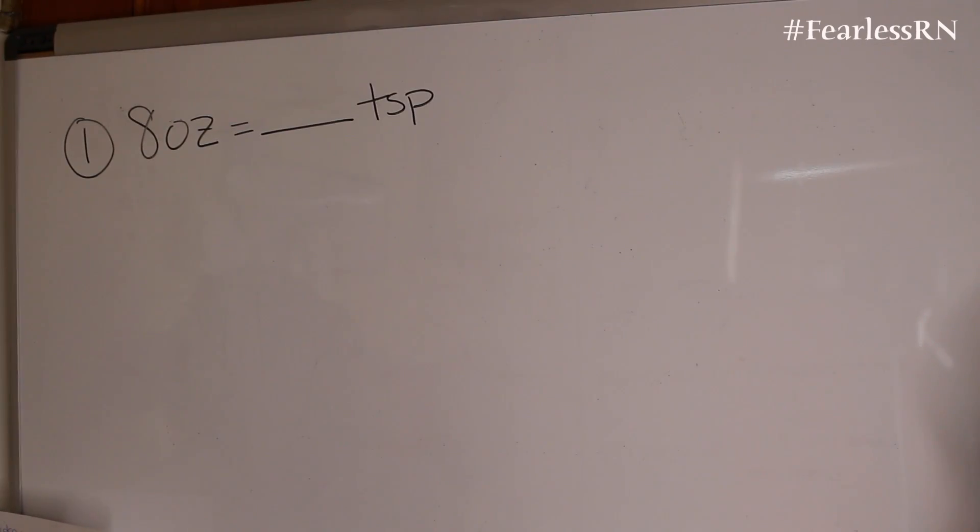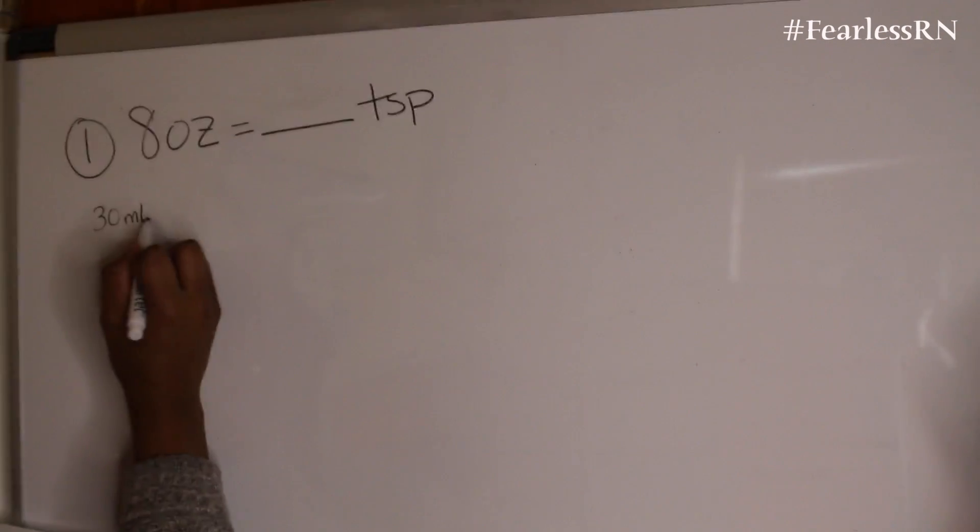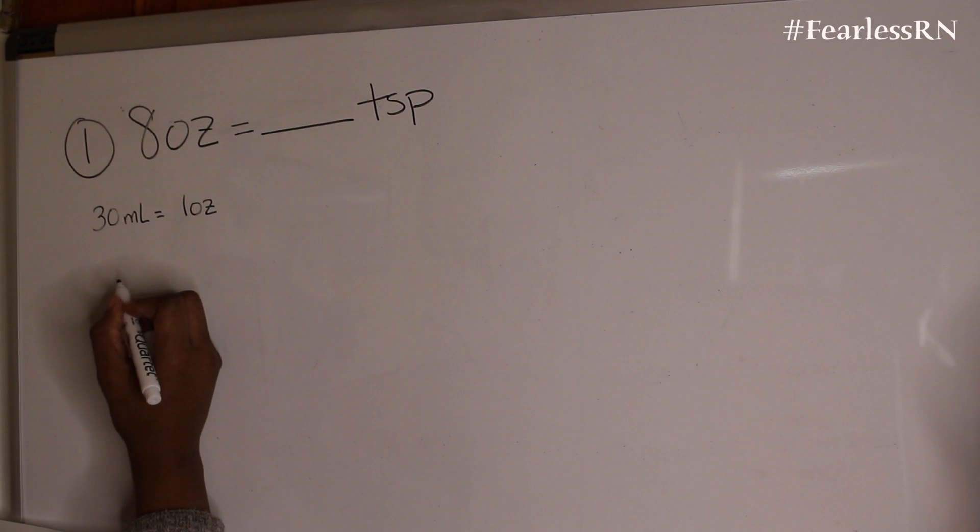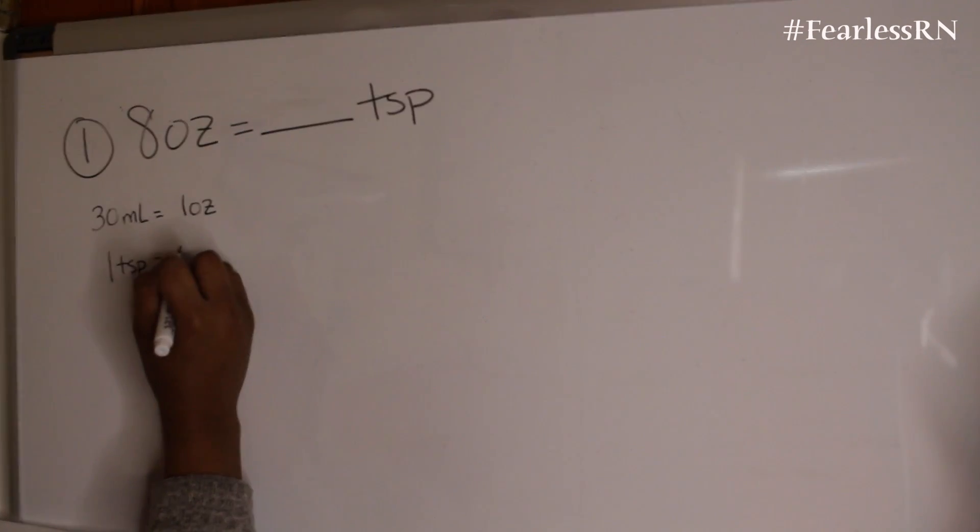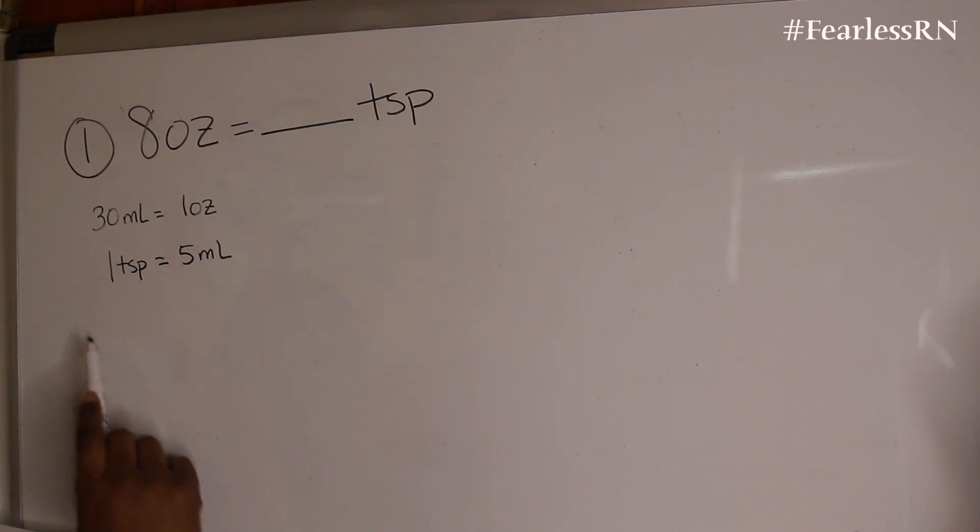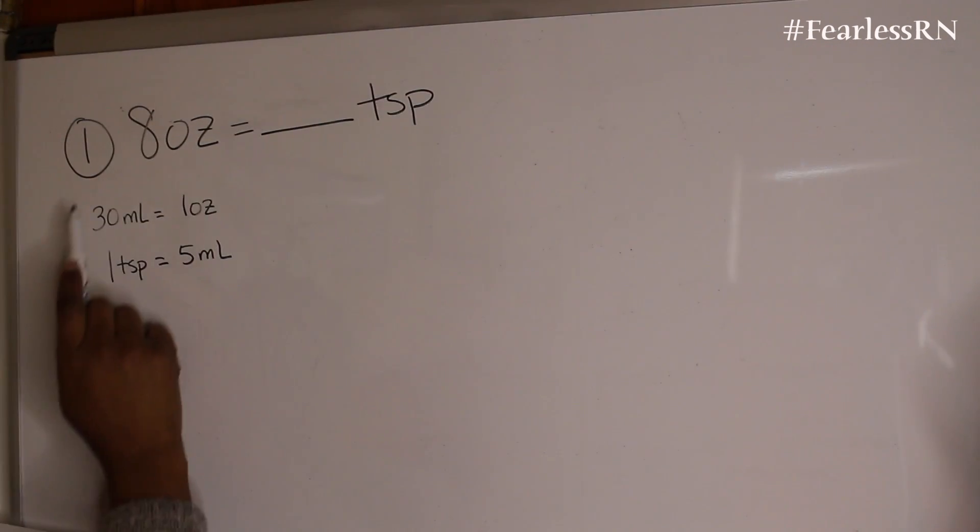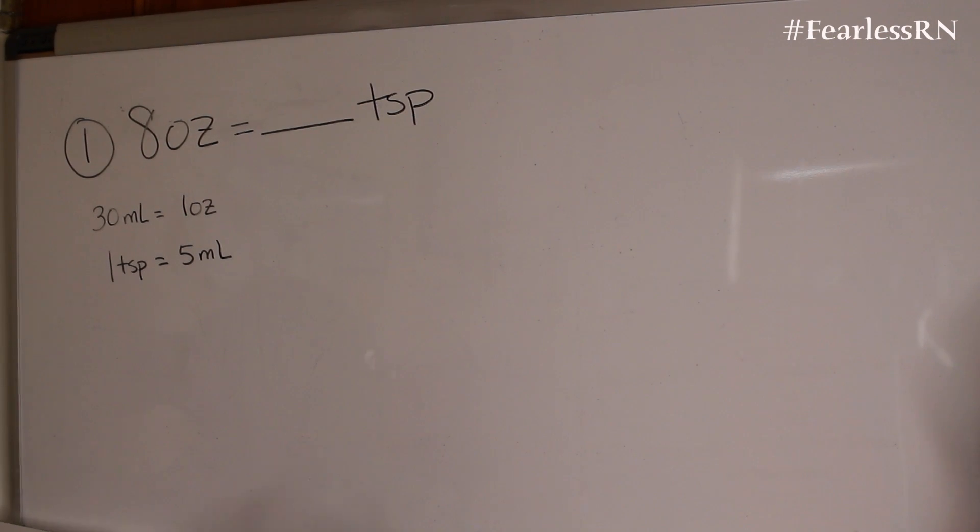Eight ounces equals how many teaspoons? So here you're gonna need to know the conversions, which is very important to know the metric table, so please refer back to the metric table and this will help you answer this problem. 30 mls equals one ounce and we also know that one tablespoon equals five milliliters. So this portion right here is from the metric table.